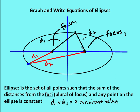Now, we've talked about circles and also parabolas. The definition of a circle is a set of all points that are equidistant from a fixed point called the center — that distance we call the radius. For a parabola, it's defined as the set of all points such that each point is equidistant from the focus — there's only one focus in a parabola — and the directrix, which is a line.